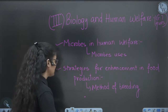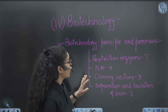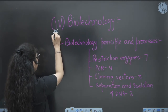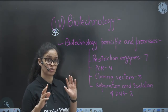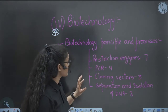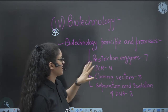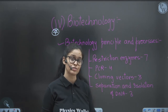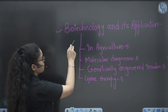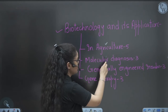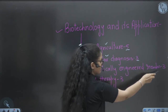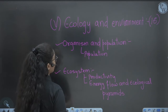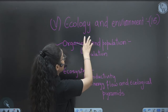Biotechnology is a very hot chapter — they ask nine to ten questions from this small unit. From Biotechnology Principles and Processes: Restriction Enzymes — seven questions; PCR (Polymerase Chain Reaction) — four questions; Cloning Vectors — three; Separation and Isolation of DNA — three. From Biotechnology and Its Applications: Application in Agriculture, Molecular Diagnosis — five questions; Genetically Engineered Insulin — three questions; Gene Therapy — three questions.